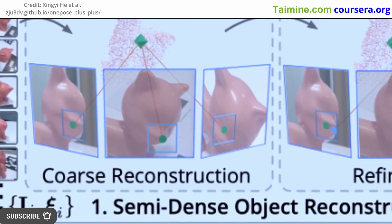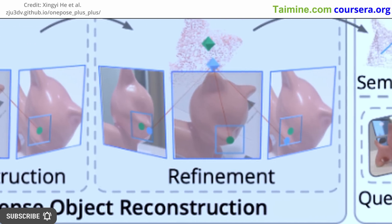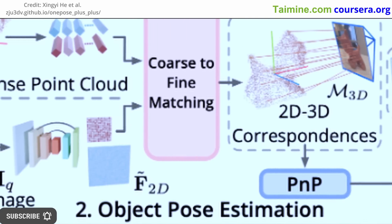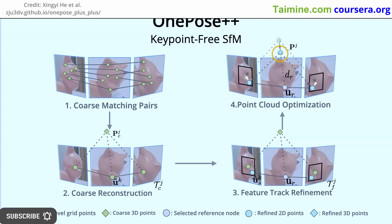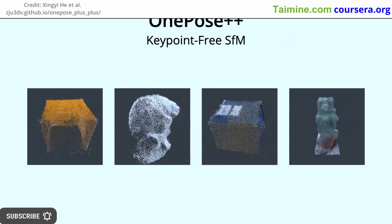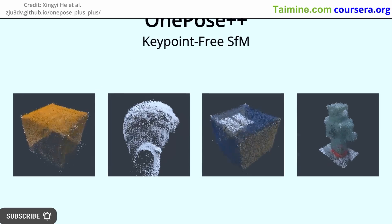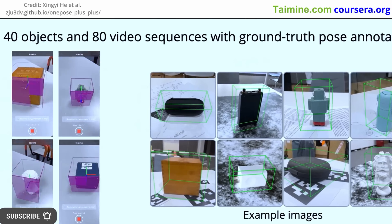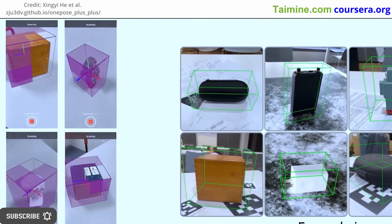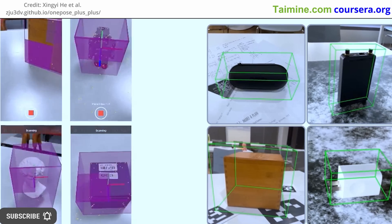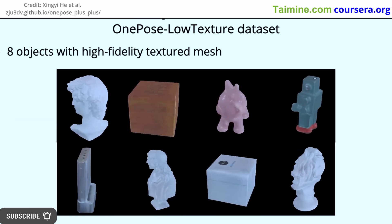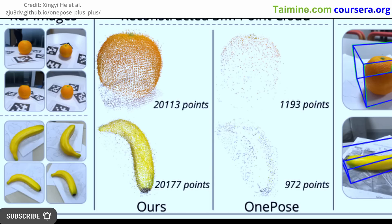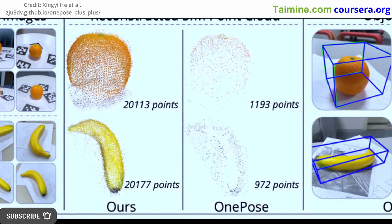All that is required is a video sequence with annotated object poses. OnePose employs a feature-matching technique that builds sparse object point clouds, links 2D and 3D keypoints, and calculates the object's pose. However, this approach faces challenges with objects that lack texture, as complete point clouds are hard to reconstruct using keypoint-based structure from motion, resulting in failed pose estimations. OnePose++ is a new approach that builds on OnePose to address the issue of low-textured objects. It uses a keypoint-free feature-matching method to obtain the correct semi-dense object point cloud from reference photos, then computes the object pose for test images progressively by linking 2D and 3D correspondences in a step-by-step fashion.